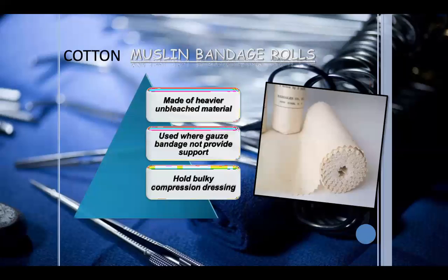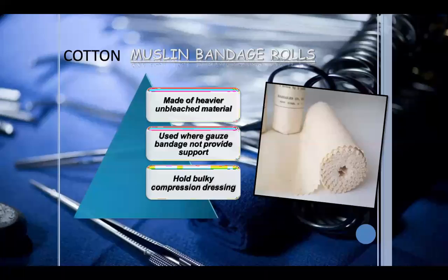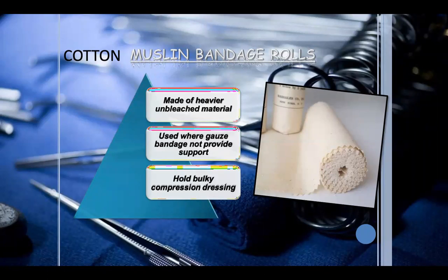The muslin or cotton bandage is used where a gauze bandage does not provide sufficient support. Where more heavy and supportive dressing is needed, muslin bandage is applied. It is used to hold bulky compression dressings in place, such as when there is an overweight or larger dressing that needs to be secured.